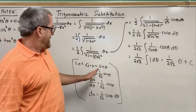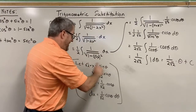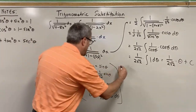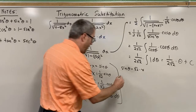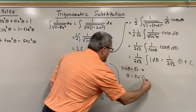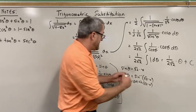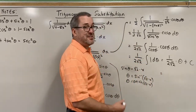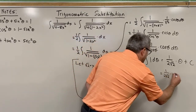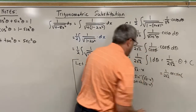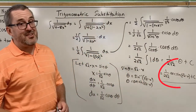Now to wrap this up, we are going to transform this back in terms of the variable x. We know that the sine of theta is the square root of 2 times x, therefore theta is the inverse sine of the square root of 2 times x. So theta is either the inverse sine or the arc sine — both notations are fine. Our final answer is 1 over 2 times the square root of 2 times the arc sine of the square root of 2 times x, plus C. So there is our final integral.